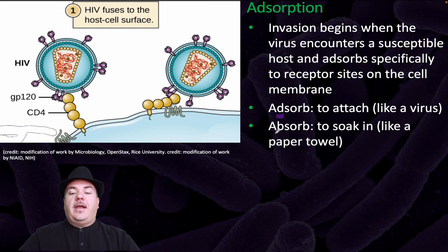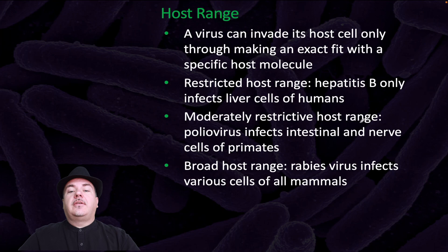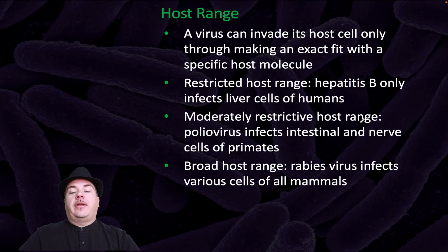Regarding host range, a virus can invade its host cell only through making an exact fit with a specific host molecule. Restricted host range: for example, hepatitis B only affects liver cells of humans. Moderately restrictive host range: for example, poliovirus infects intestinal and nerve cells of primates. Broad host range: for example, the rabies virus infects various cells of all mammals.